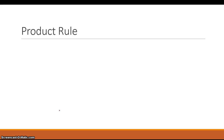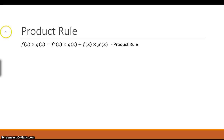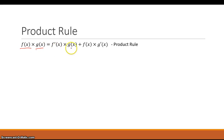The next rule is the product rule, which is a little more complicated but still easy to understand. When you have the product of two different functions, f(x) and g(x), the derivative is: the derivative of the first term times the second left alone, plus the first term left alone times the derivative of the second. Those two pieces added together give you the product rule. It's a fairly straightforward rule that shows up quite a bit.